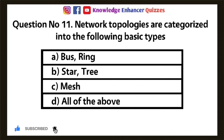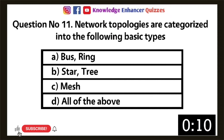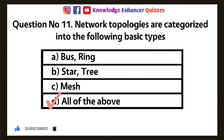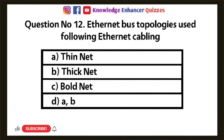Question 11: Network topologies are categorized into the following basic types — Option D: All of the above. Option D is the right answer.